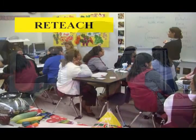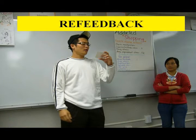Step number five: Re-teach. The teacher trainee re-teaches the revised lesson to another but comparable group of students. The supervisor checks to see whether there is any improvement in skill attainment. Step number six: Re-feedback. The supervisor assesses the lesson once again and provides feedback to the trainee. This process repeats until the teacher trainee acquires the required level of competency.